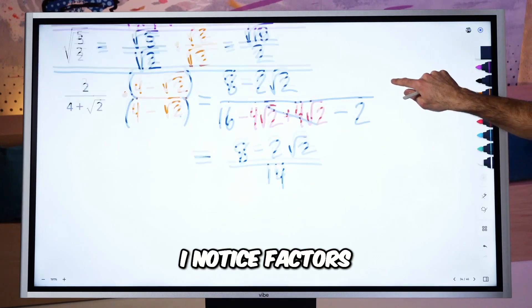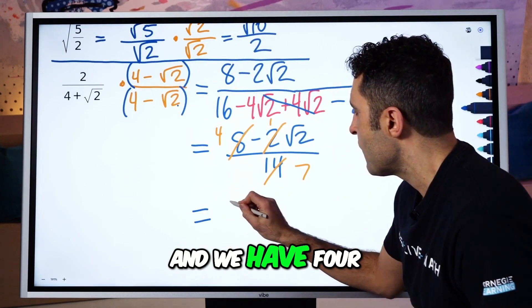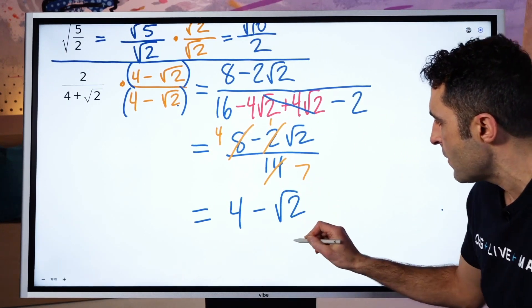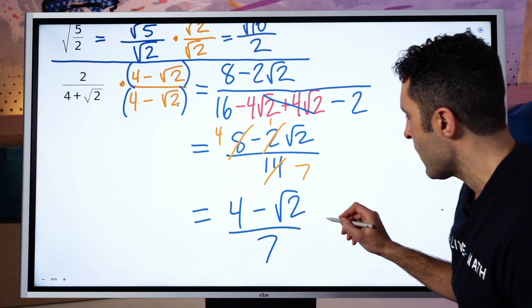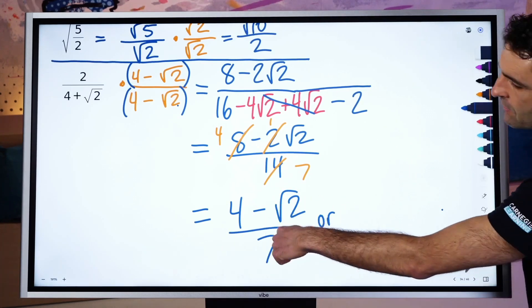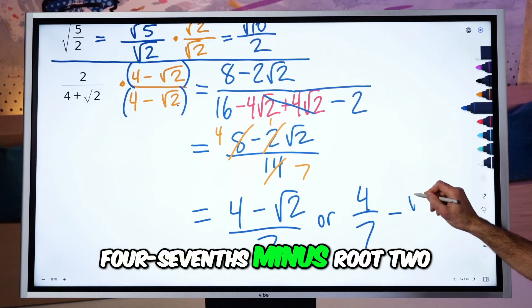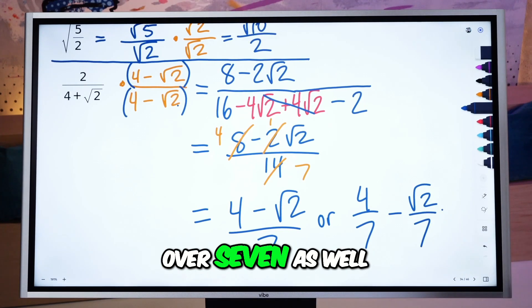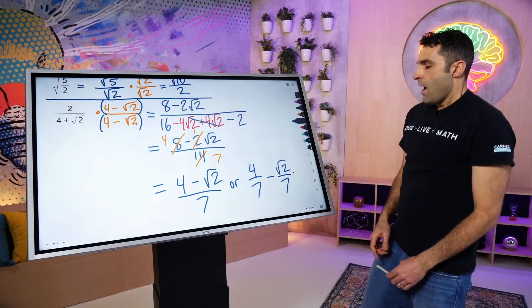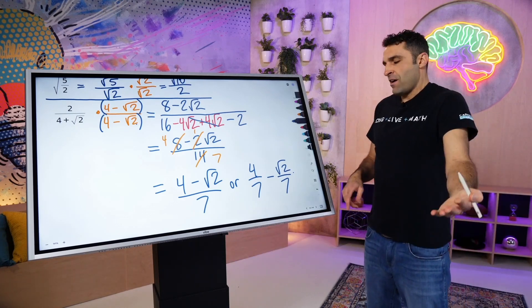I notice factors. And we have 4 minus the square root of 2 all over 7. Or some teachers prefer that you divide into both. You could say 4 7ths minus root 2 over 7 as well. Take a breath. Onward. Let's go.